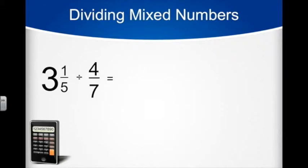First, just like in multiplication, we need to convert 3 and 1 5th into an improper fraction. 5 times 3 is 15, plus 1 is 16. So we have 16 5ths.